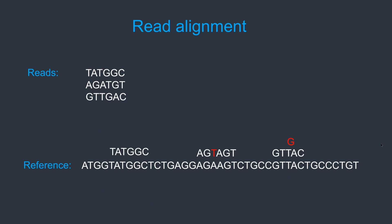After alignment, we can see the first read perfectly aligned to the reference genome. The second read has a substitution mutation — it has T in the read but the reference contains A. The third read has an insertion: there is a G in the read but there is no G in the reference genome. The alignment algorithm can align reads even when there are mismatches and gaps between the reads and the reference genome.